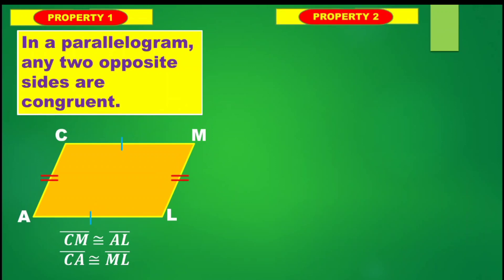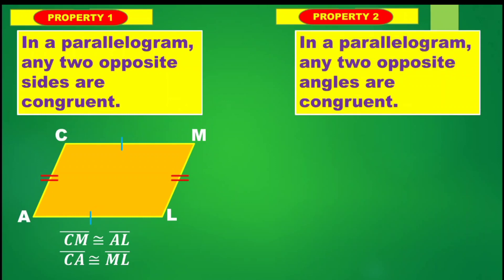Let's proceed to property number two. It says that in a parallelogram, any two opposite angles are congruent. At this point, we will be talking about the angles.